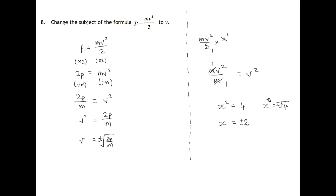That's not expected at National 3, National 5 level. You get full marks for just leaving that as the square root of 2P over M.